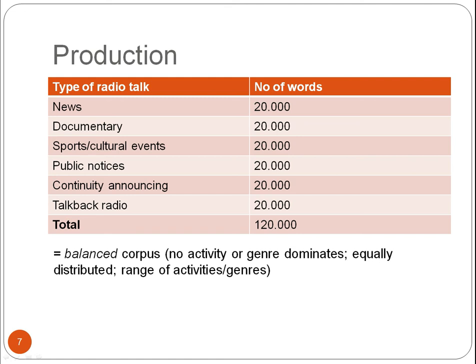It's also possible to combine reception and production perspectives. For example, if you wanted to design a corpus of TV dialogue, you could first find out what different types of TV genres there are — for example, drama series versus comedy — and then include an equal amount of TV genres in your corpus, but focus on those TV series that have the most viewers, so are the most popular, in terms of reception.